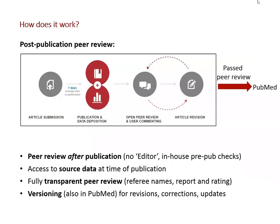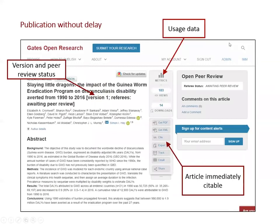Here is an example from Gates Open Research of an article that had just been published. You can see it's very clearly labeled as version one and still awaiting peer review. On the right-hand side, you can see our open peer review box, which also shows it's awaiting peer review. But importantly, it's a full article at this point — immediately citable and able to accrue usage data. Within a couple of days of publication, this article already had over 100 views and some downloads.